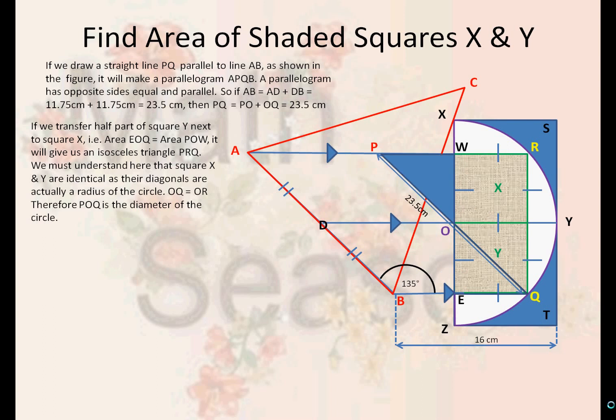We must understand here that squares X and Y are identical as their diagonals are actually a radius of the circle. Therefore, POQ is the diameter of the circle.